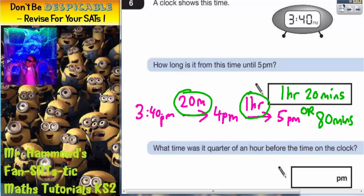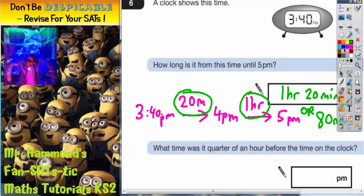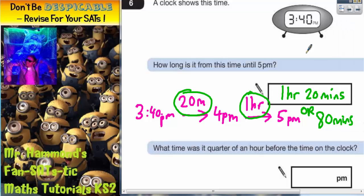So either of those two answers are acceptable. For the second question, it says what time was it quarter of an hour before the time on the clock?